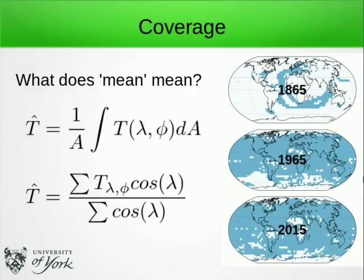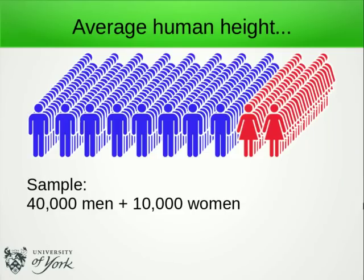We have a problem, which is that we don't have observations for all the grid cells. So what we can do is just calculate an average over the cells that we have. And here's where the problem really arises. To see why, let's look at a simpler problem.